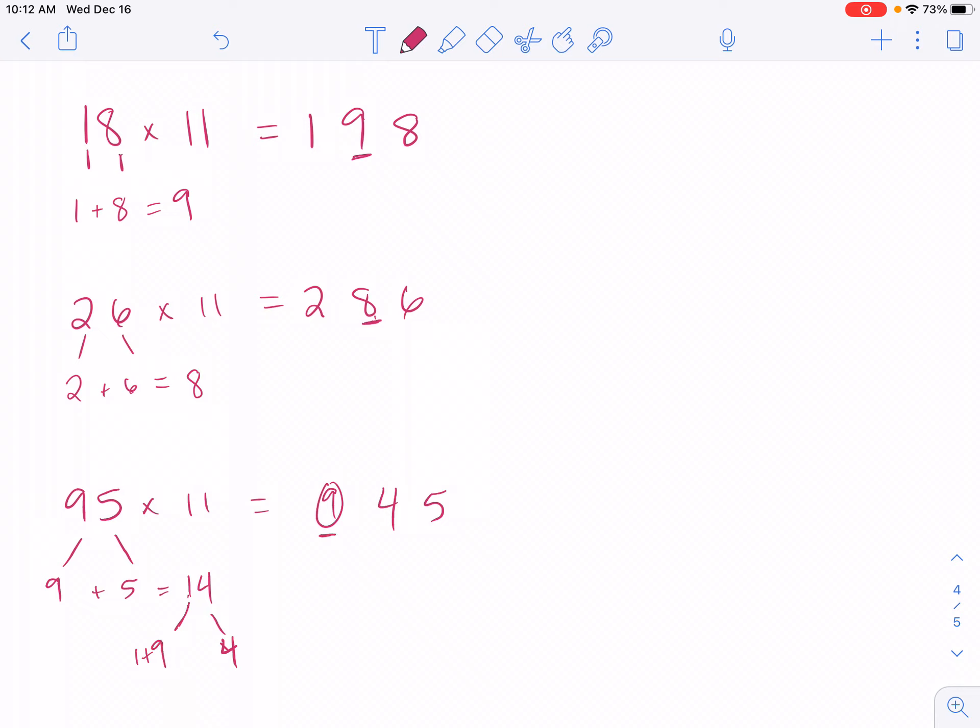But what you're going to do with this 1 is you are going to add it to your 9. Okay, so this was your first digit in your answer originally, but you're going to add it to this 1. So 1 plus 9 is 10. So instead of a 9 being right there, what we're actually going to put is 10.